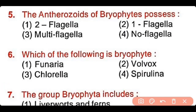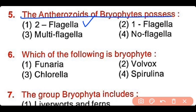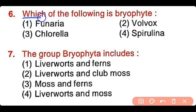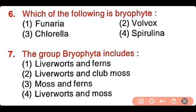Question number 5: The anterozoids of bryophytes possess 2 flagella, 1 flagellum, multiple flagella, or no flagella. The correct answer is option 1 — the anterozoids of bryophytes are biflagellate. Question number 6: Which of the following is a bryophyte? Funeria, Volvox, Chlorella, or Spirulina. The correct answer is option 1. Funeria is a bryophyte while the remaining are different types of algae.